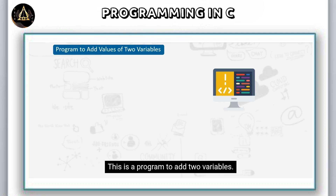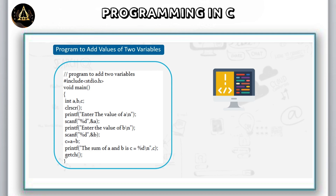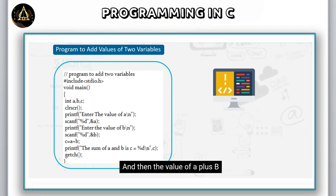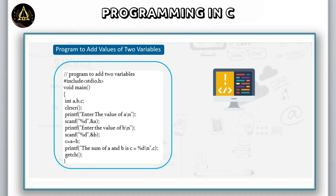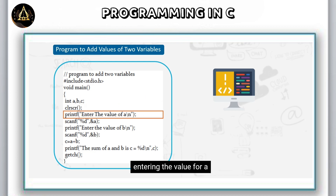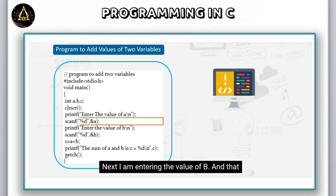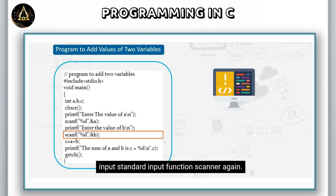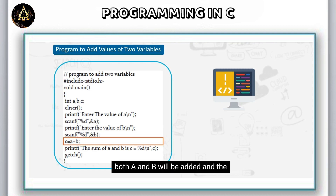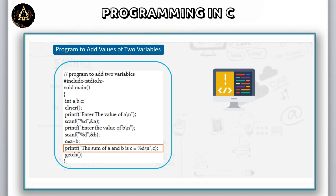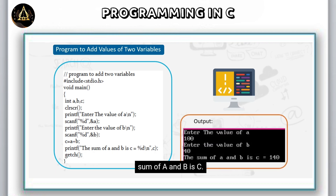This is a program to add two variables. We have variables a and b which need to be added, and the result of a + b is stored in another variable c, which is then displayed. Three variables a, b, and c are declared. The first printf statement prompts to enter the value for a, which is read through scanf. Next, the value for b is entered and also read through scanf. Then a and b are added, the result is stored in c, and finally the statement displaying the sum of a and b is printed.